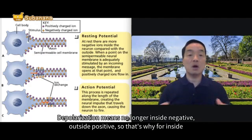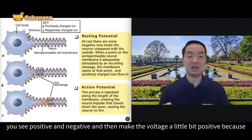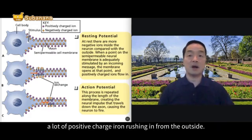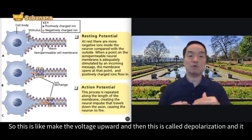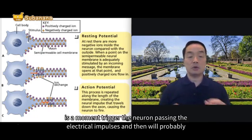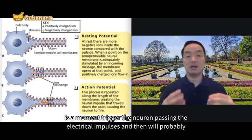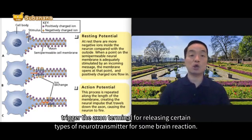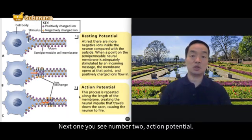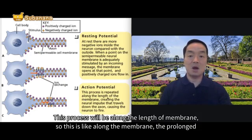Depolarization means no longer negative inside and positive outside. Inside you see positive and negative mixed, making the voltage a little bit positive because a lot of positively charged ions rush in from outside — the voltage goes upward. This is depolarization, and it is the moment that triggers the neuron to pass the electrical impulses and then trigger the axon terminals to release certain types of neurotransmitters for brain reaction. This process — action potential — is repeated along the length of the membrane.